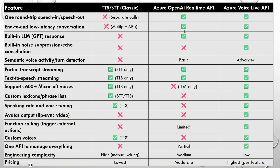Built-in noise suppression and echo cancellation is not available in TTS or real-time, but it is available in Voice Live API — and this is a very useful feature. I've built multiple OpenAI real-time API applications, and the main challenge was that in a group or noisy environment, the model would immediately stop and start listening to background noise. That created a lot of issues requiring manual customization. This has now been taken care of in Azure Voice Live API.